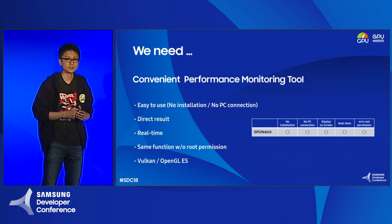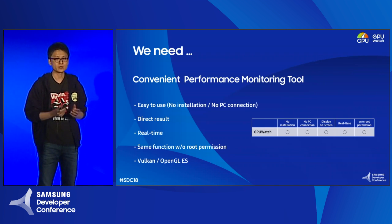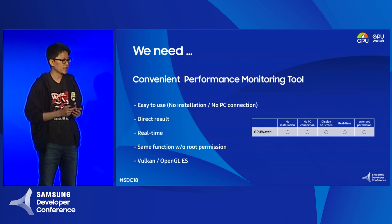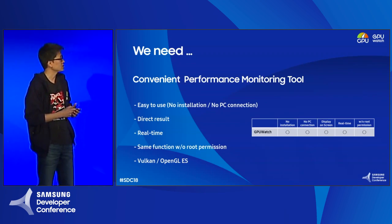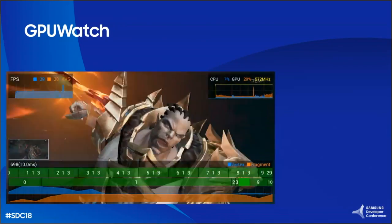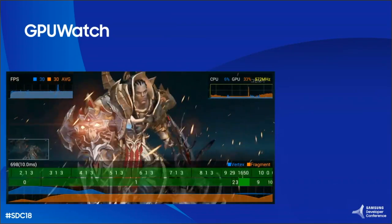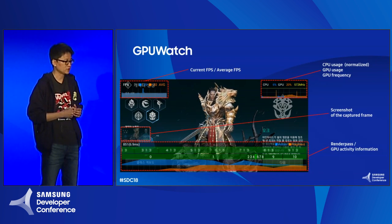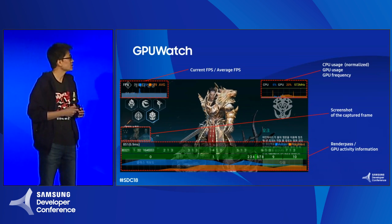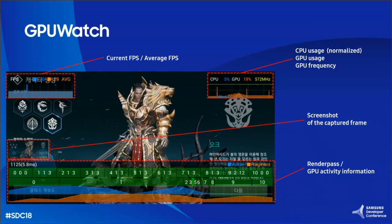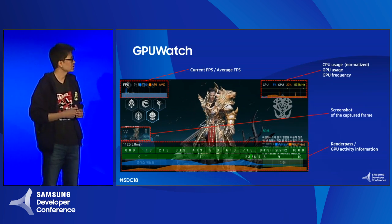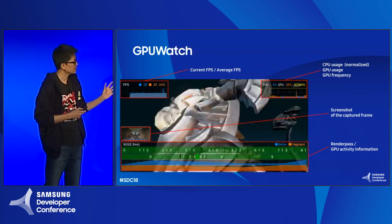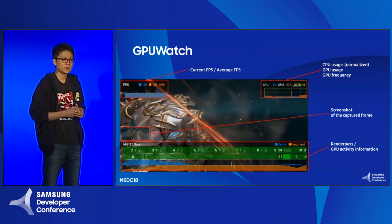GPU Archie is our brand name for performance monitoring tools. When a game is running, GPU Archie shows performance results directly on screen in real time. It shows several pieces of information: FPS information, CPU and GPU usage information, and GPU profiling information. Let's take a look at these one by one.